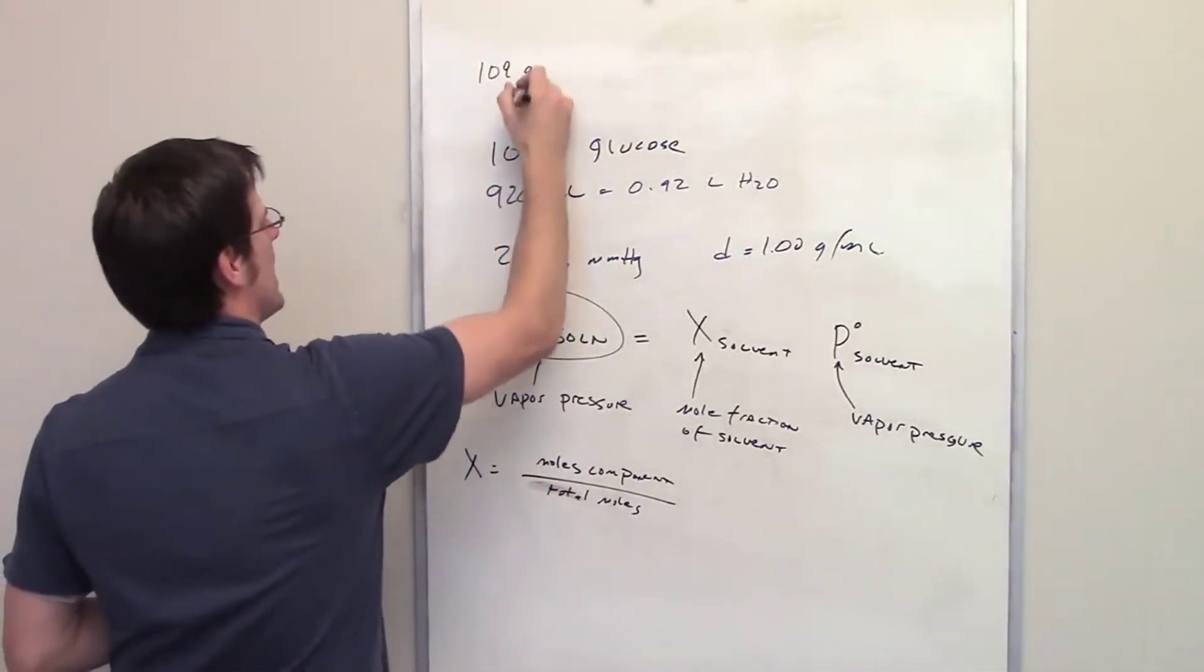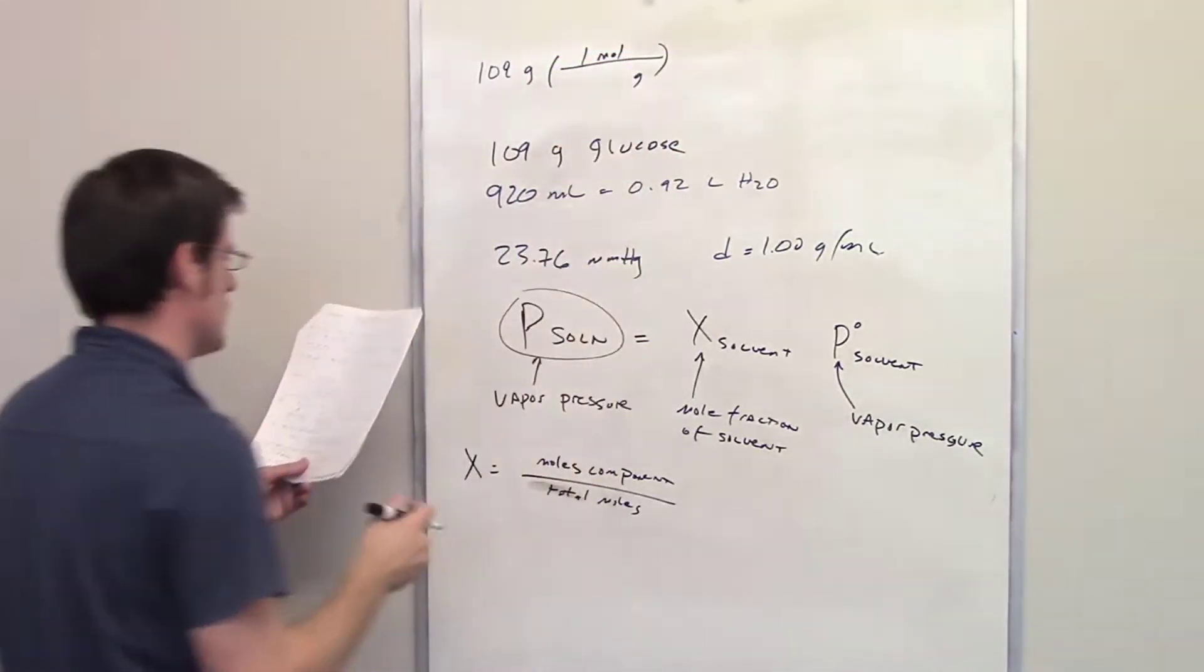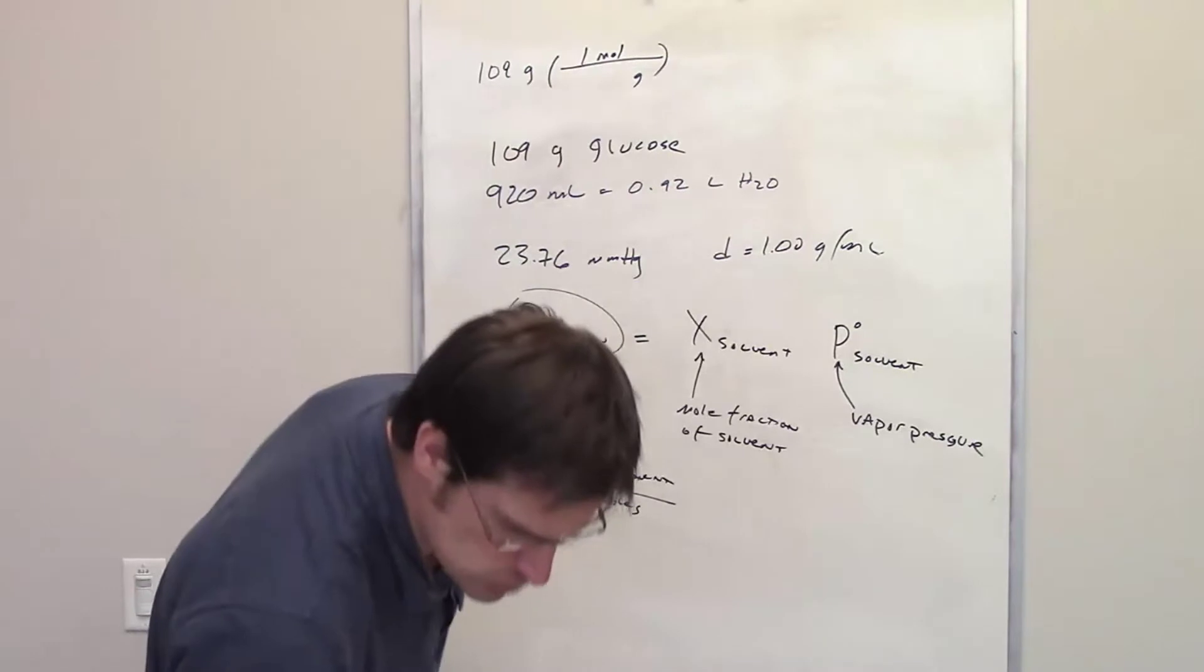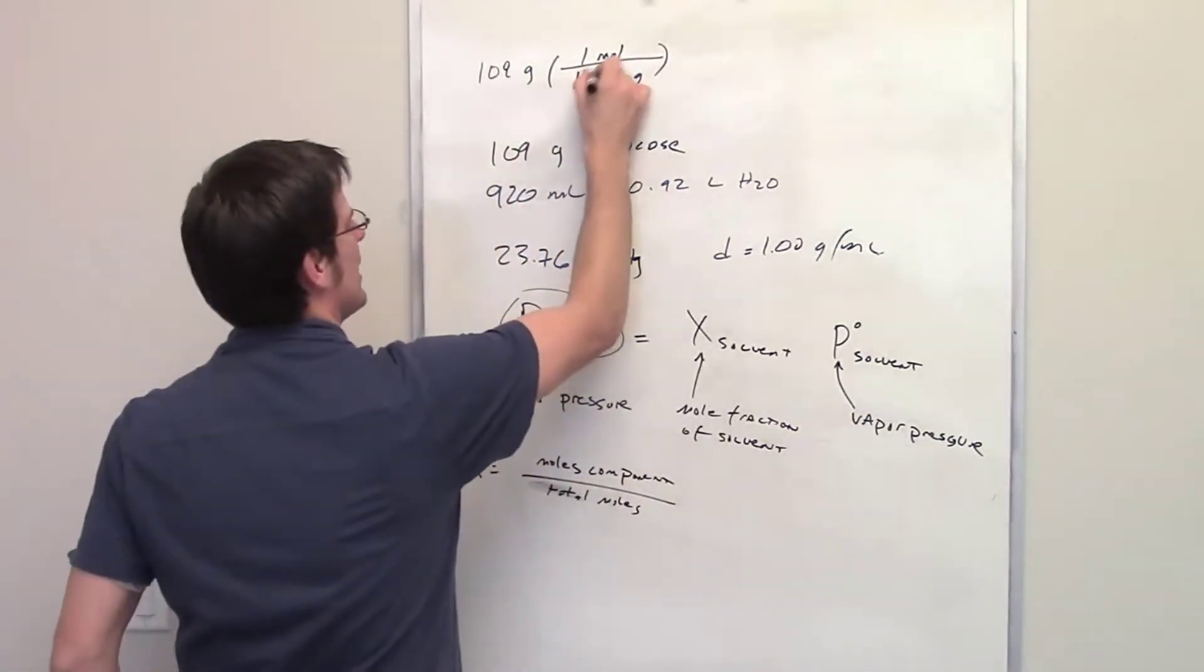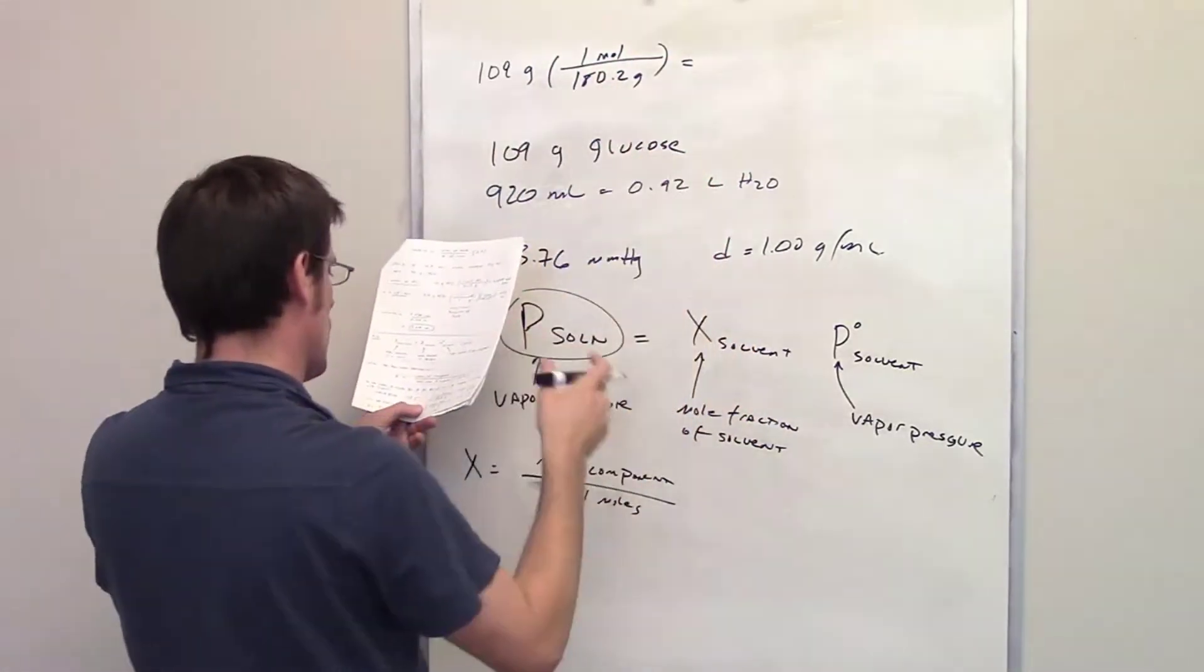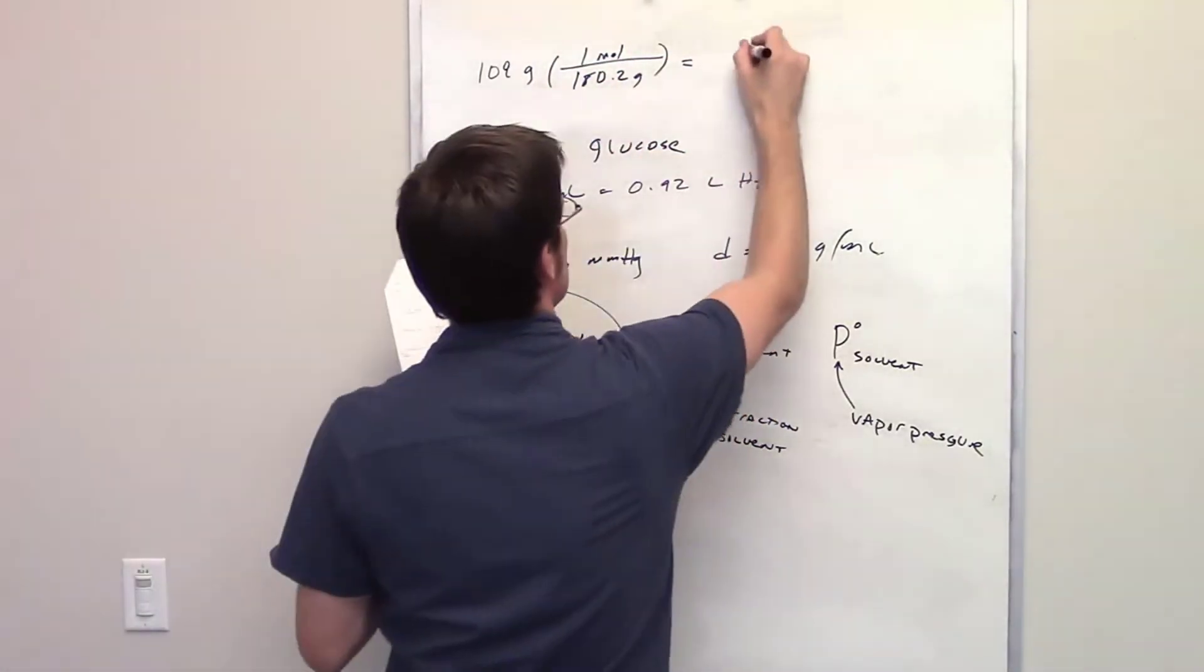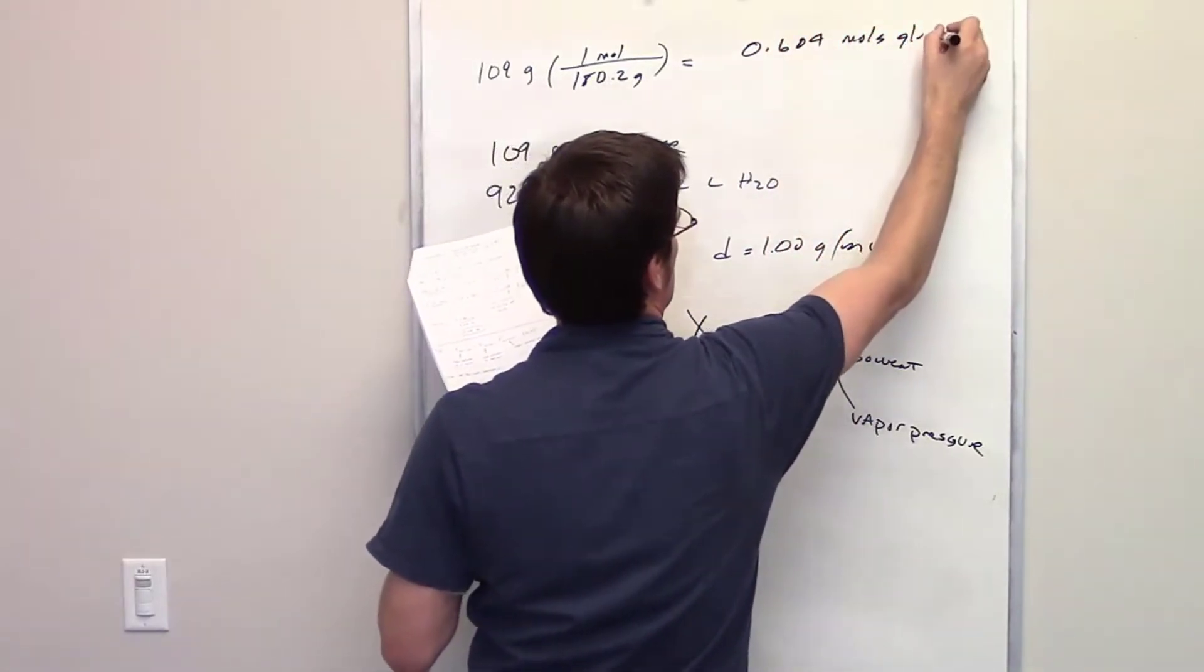So I've got 109 grams of glucose. It gives me the molecular weight of glucose as 180.2. You throw that in your calculator, and it tells us that the total number of moles of glucose is 0.604 moles.